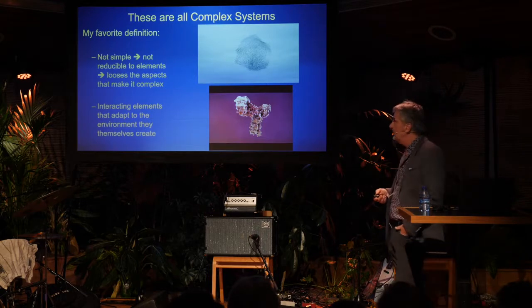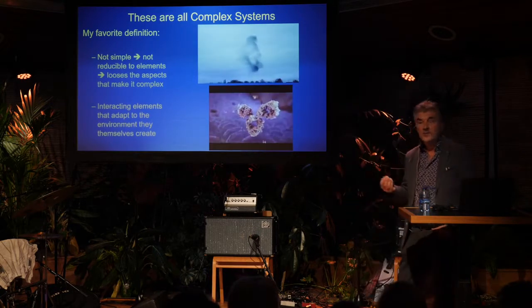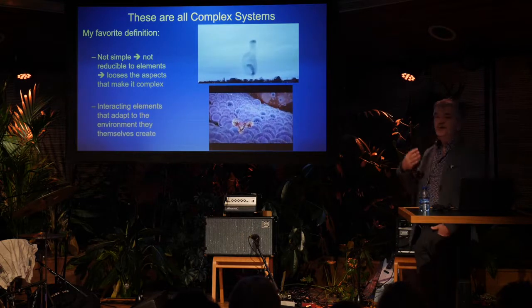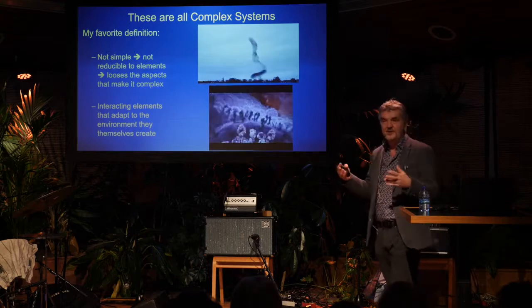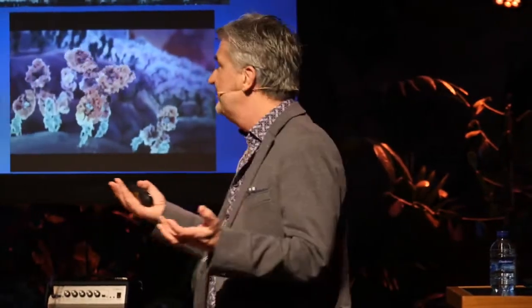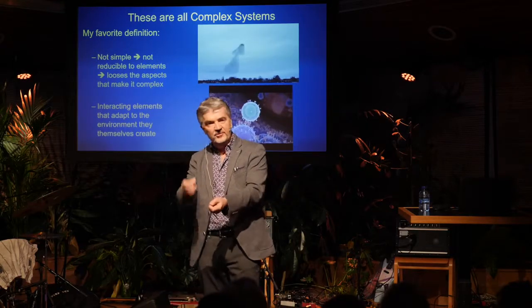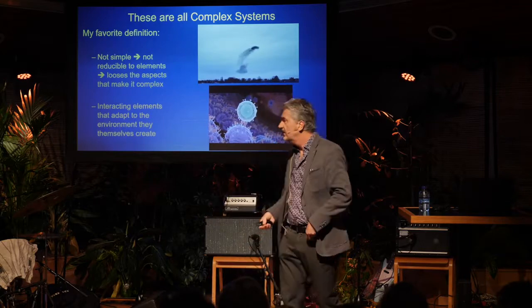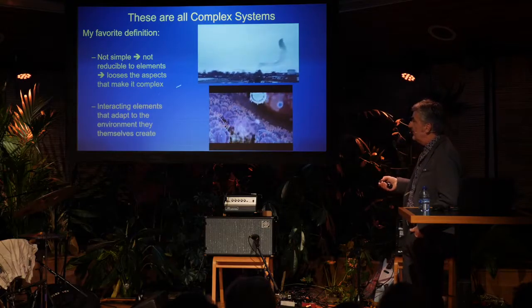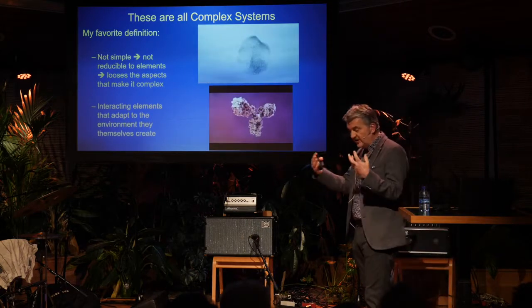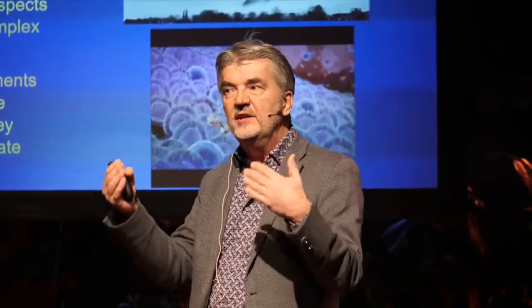So what are complex systems? Well, there are many forms. My favorite definition is: a complex system is obviously not simple. The moment I take it apart — like a physicist would, hammering on it until I hit the atoms — I actually lose what I'm looking for. By taking it apart, I lose it. These complex systems consist of elements that are constantly interacting with each other and constantly evolving over time, and not only the elements but also the interactions are co-evolving.